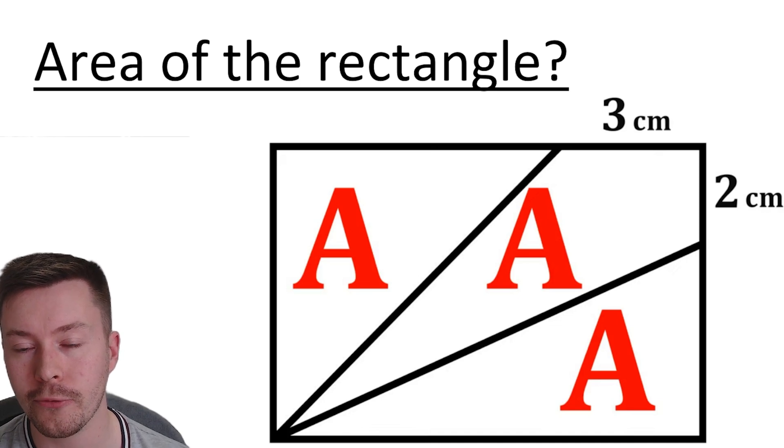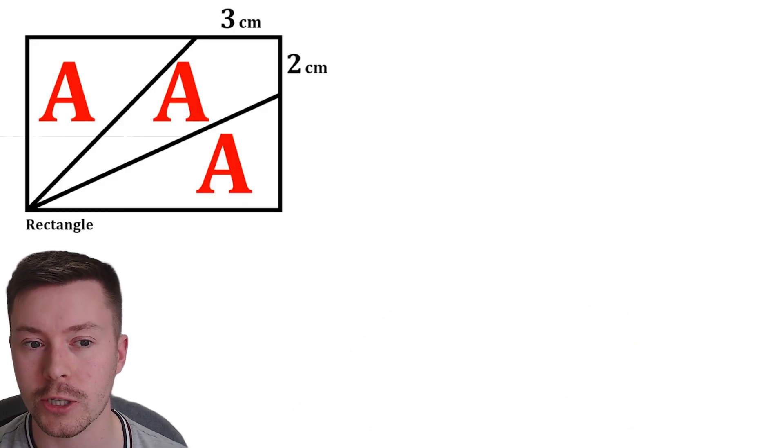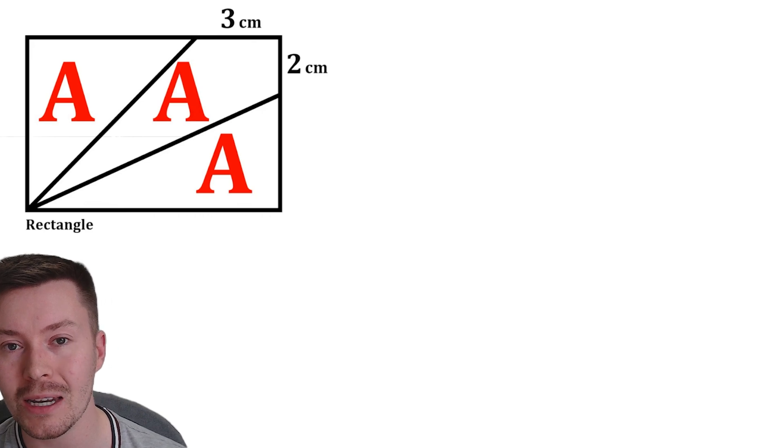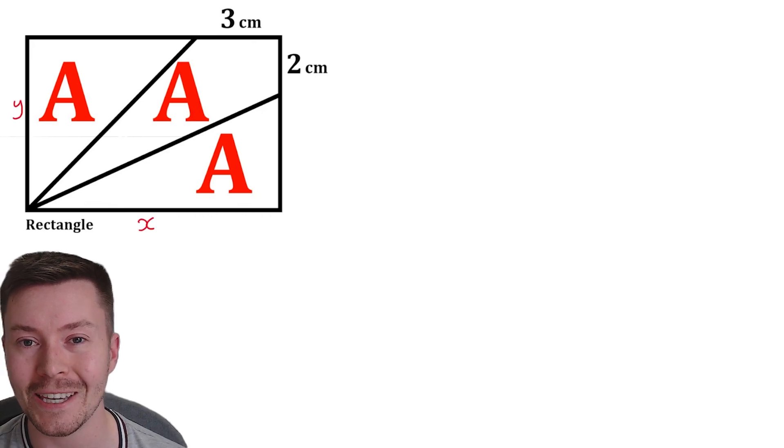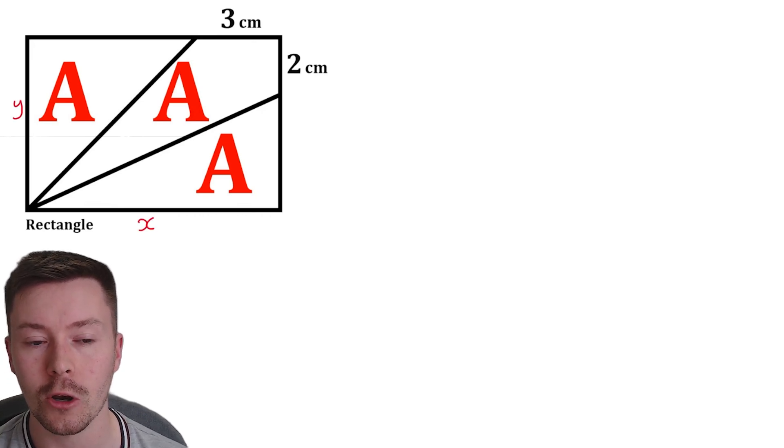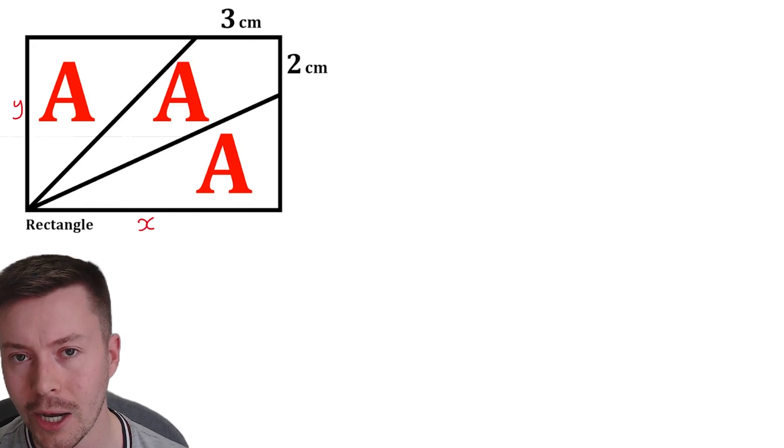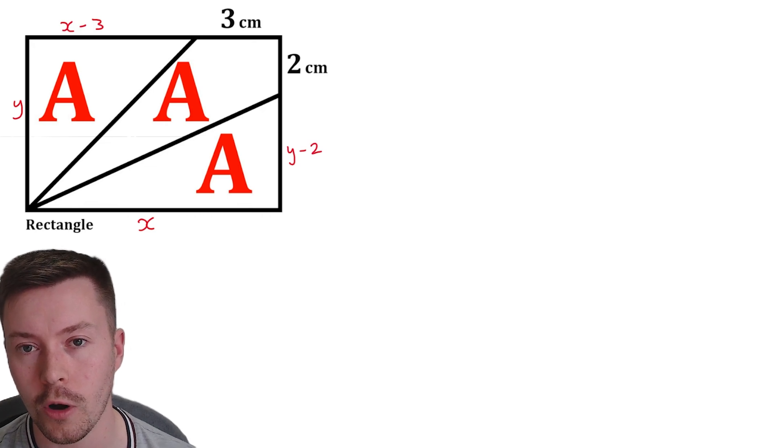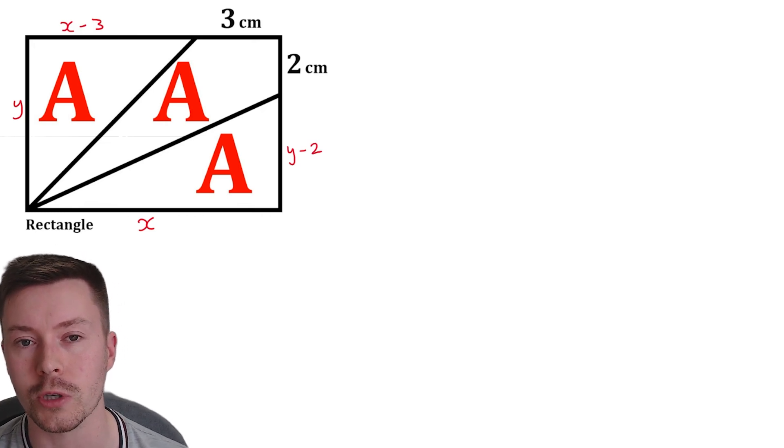Okay, now what I'm first going to do is make this a little bit smaller because we're going to need some room. Then I'm going to label the sides X and Y. So along the bottom I'm going to call that X and vertically I'm going to call that Y, the height of the rectangle. I'm now going to label the other sides of the rectangle, so we've got Y minus two below the two centimeters and X minus three along the top next to the three centimeters.